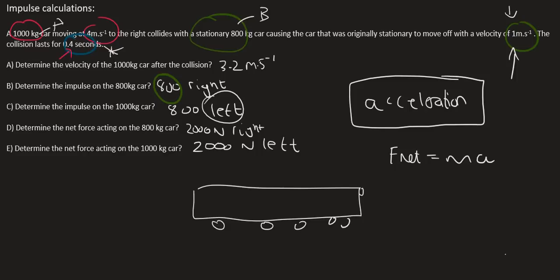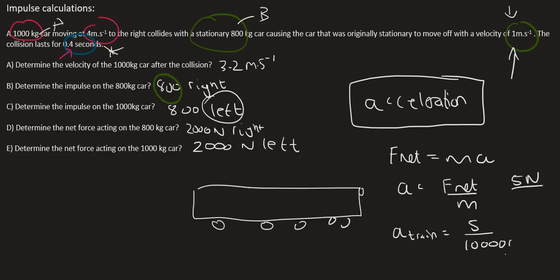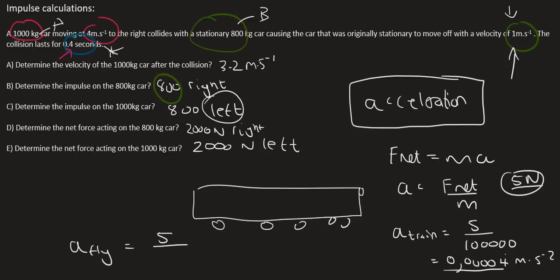We know F_net equals MA from grade 11, so acceleration equals F_net over M. We said F_net is the same for both — let's say 5 Newtons. For the train, acceleration equals 5 divided by its mass, say 100,000 kilograms, giving a tiny number like 0.00005. For the fly, it's also 5, but divided by the fly's mass of about 10 grams, which is 0.01 kilograms, giving 500 meters per second squared.